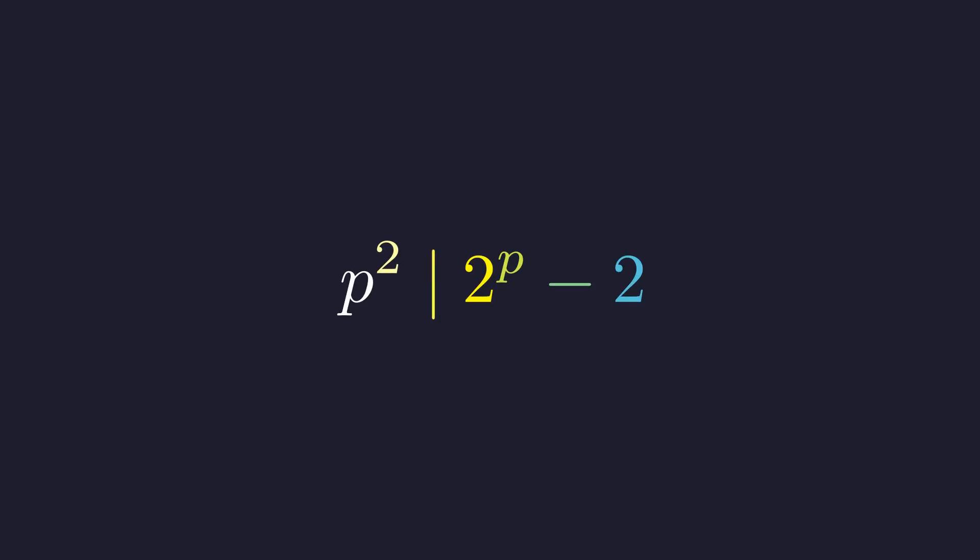Today we embark on a mathematical treasure hunt for one of the rarest objects in number theory. We seek all prime numbers p, where p squared divides 2 to the power of p minus 2. This deceptively simple condition conceals a profound mystery that has captivated mathematicians for over a century.